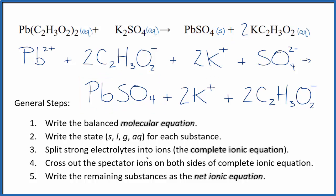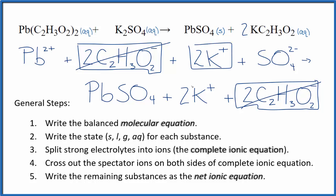Now we can cross out spectator ions. They're on both sides. So in the reactants, I have these two acetate ions here. And again, I have two acetate ions in the products. These are spectator ions. We're going to cross these out. Two potassium ions in the reactants. And again, in the product spectator ions, we cross them out. What's left is the net ionic equation for lead(II) acetate plus potassium sulfate.